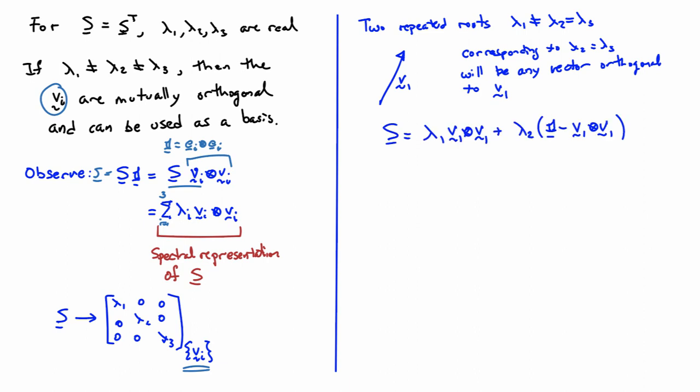The spectral representation looks as follows. We'll have S is equal to lambda 1 v1 v1. So that would be like the first term out of our expression over here for the spectral representation. And then the second two terms, the ones with the lambda 2 and the lambda 3, we can write as follows as lambda 2 identity minus v1 outer product v1. So the proof of that's a little involved but this is the representation that one gets if you have two repeated roots.